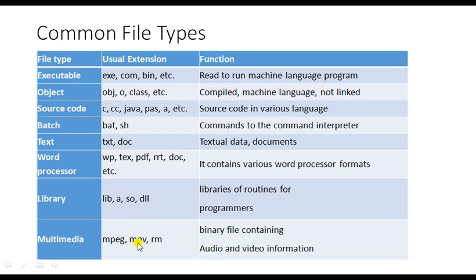Multimedia files contain audio and video information and have extensions like .mpeg, .mov, .rm. These are the common file types used across different operating systems like Windows and Unix. Every file has a certain extension, and based on that extension the operating system identifies the type of the file.